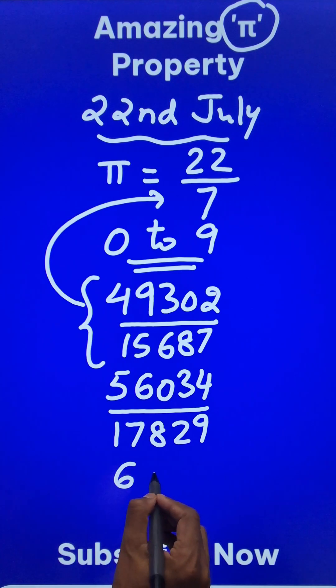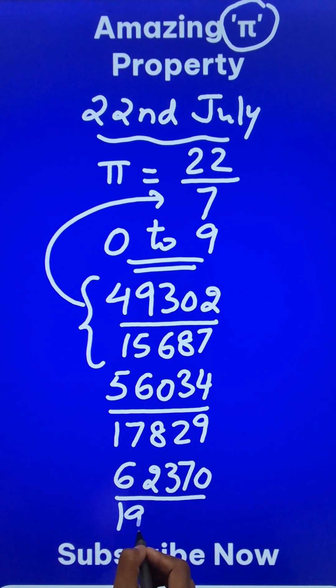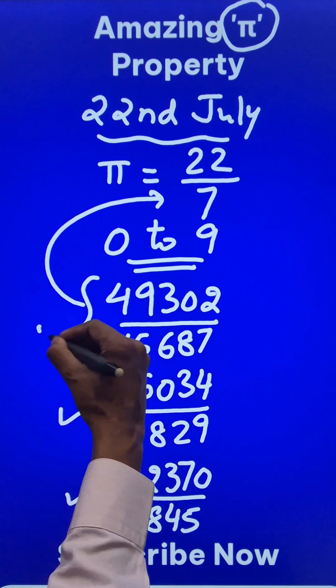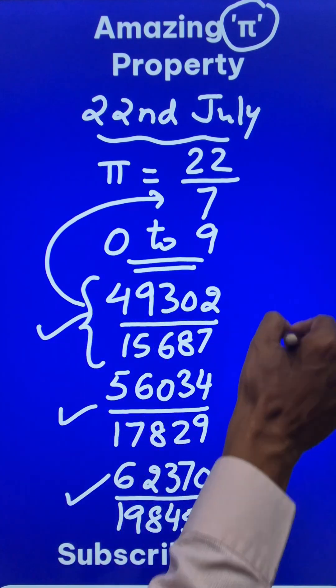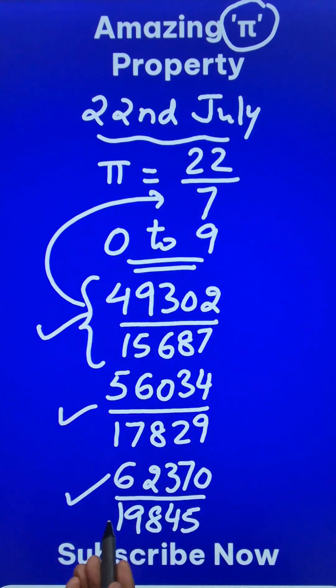Likewise, another example: 62370 upon 19845. These are three pan-digital numbers containing all the digits from 0 to 9 and all of these fractions reduce to the value of pi 22 by 7.